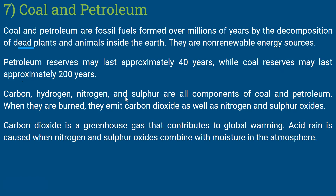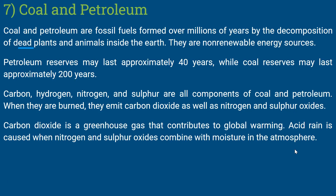Carbon, hydrogen, nitrogen, and sulfur are all components of coal and petroleum. When they are burned, they emit carbon dioxide, nitrogen oxides, and sulfur oxides. Carbon dioxide is a greenhouse gas that contributes to global warming. Acid rain is caused when nitrogen and sulfur oxides combine with moisture in the atmosphere, forming H2SO4 and HNO3 which fall as acid rain.